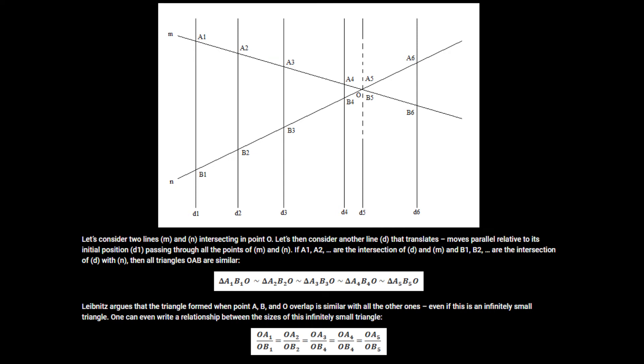There is an argument, used by Leibniz, when he considers the ratios for a series of similar triangles. Leibniz argues that the triangle formed when point A, point B, and point O overlap, is similar with all the other triangles, even if this triangle is an infinitely small triangle. The conclusion that follows from here is. Even if some quantities are infinitesimal, ratios that involve these quantities have defined values, they have meaning. The ratios keep the same values they have when the quantities are not zeros.